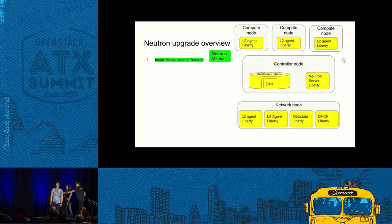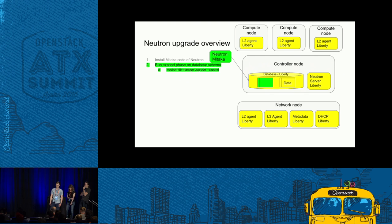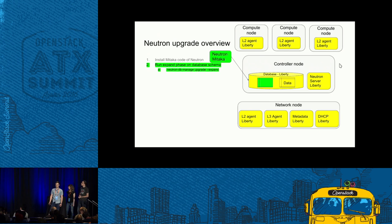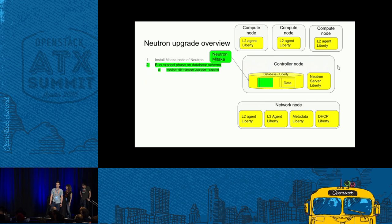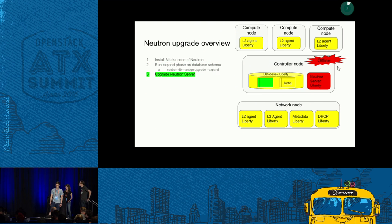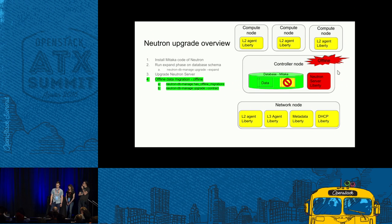You have to get the database access on the node. In the case of a database upgrade, Neutron has a two-phase upgrade: the expand phase, where only additive changes are applied to the database, and the contract phase, when you have removal or altering of tables. The expand phase can be done during Neutron server runtime, so we reduce the downtime of the API. After the expand phase is completed, we go into the offline phase where we upgrade the Neutron process itself and its dependencies.